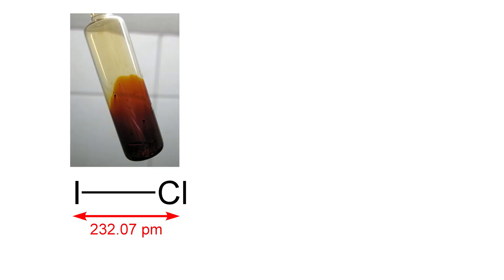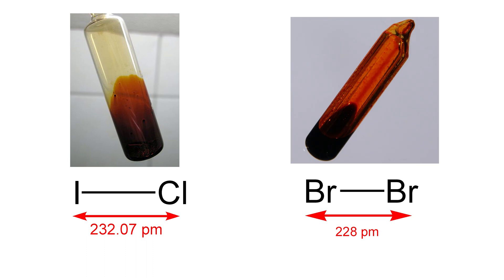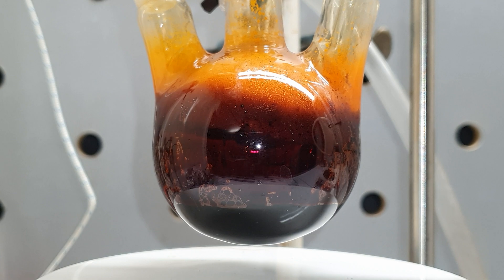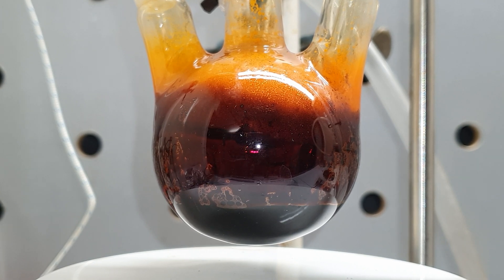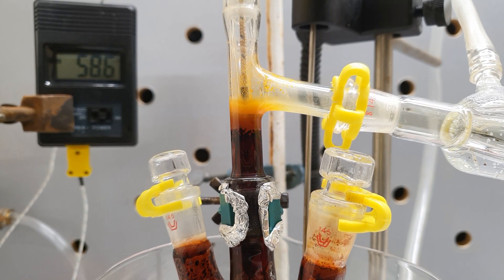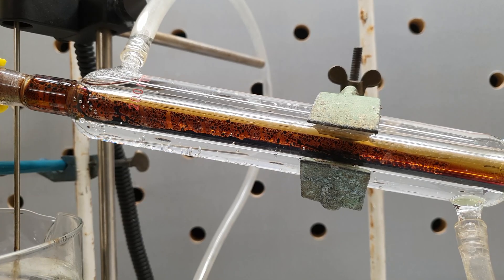For example, iodine monochloride, which I am going to be making in this video, has a lot of the same properties as bromine, although it doesn't actually contain any bromine atoms. So prepare for a very interesting synthesis, because in my opinion, this is one of the most beautiful chemicals I have ever seen.